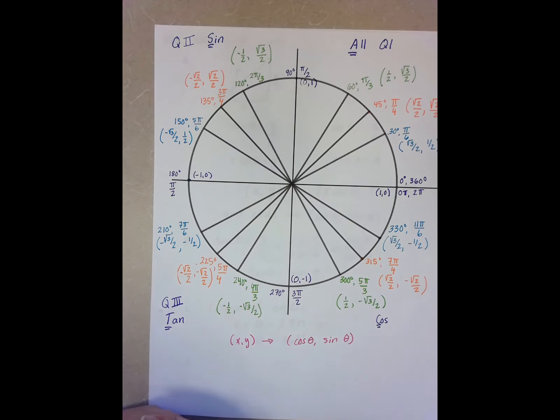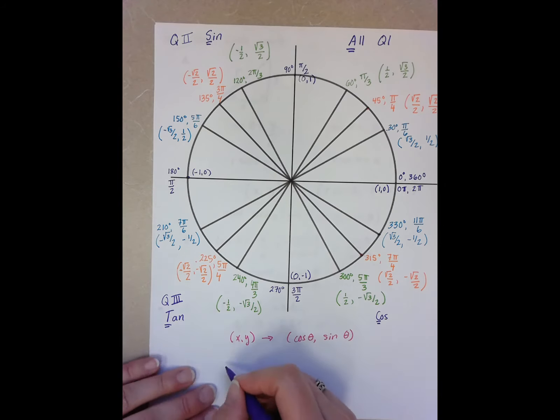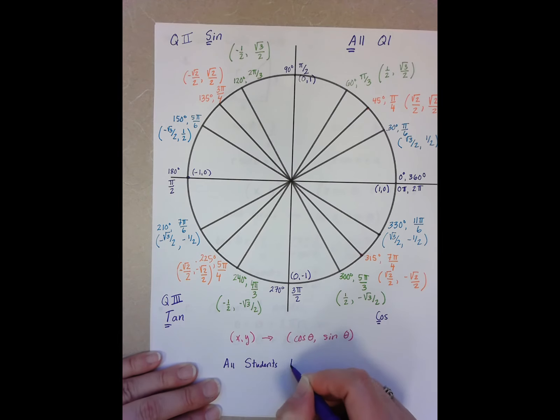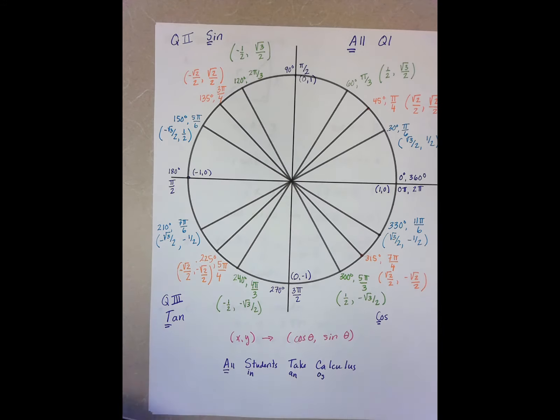And the way that I was taught to remember that it's all positives, sines are positive, tans are positive, and cosines are positive, was the acronym All Students Take Calculus. So there's my all, there's my sine, there's my tan, and there's my cosine.